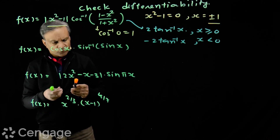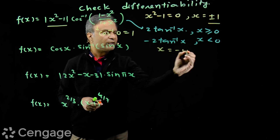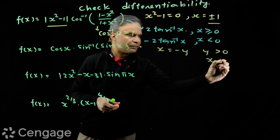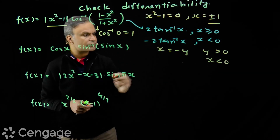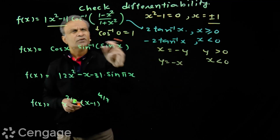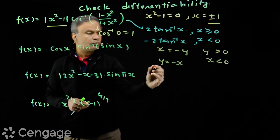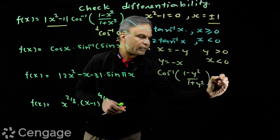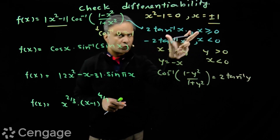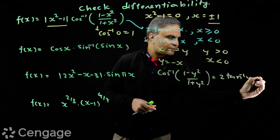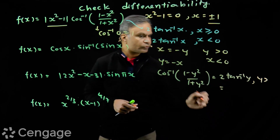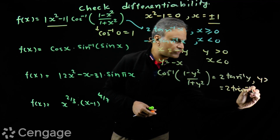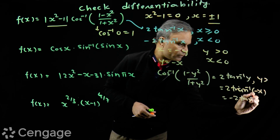We can prove the x < 0 branch by substituting x = -y where y > 0. Then cos⁻¹((1-y²)/(1+y²)) = 2·tan⁻¹(y) from the standard formula. Now substituting back y = -x, we get 2·tan⁻¹(-x) = -2·tan⁻¹(x). So we have two branches, both differentiable in their respective domains.